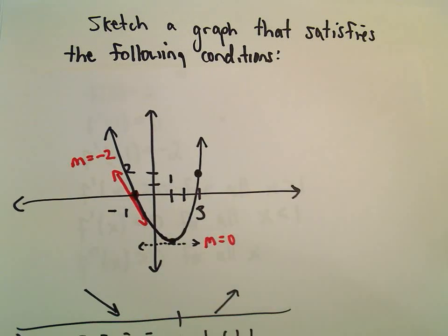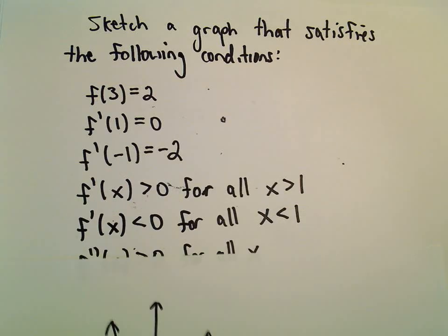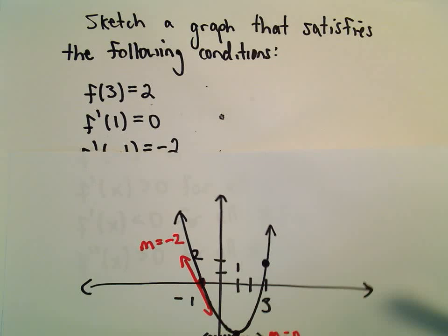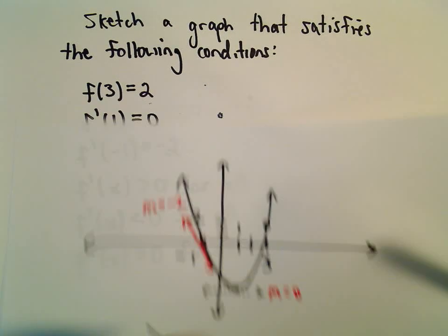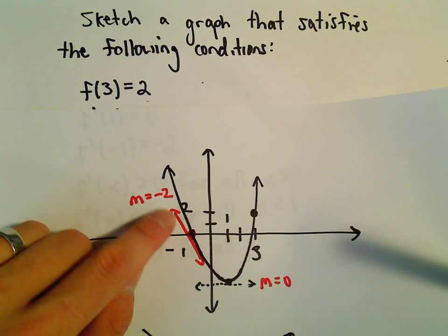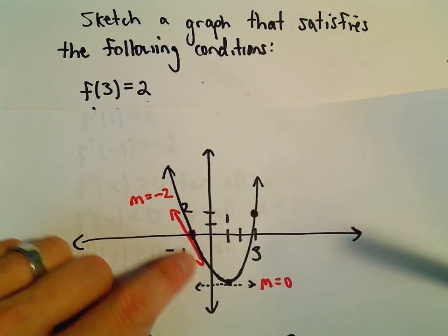Now we've got a picture that agrees with all the conditions. It goes through (3, 2), f prime of 1 equals 0 so the tangent line is horizontal, and f prime of negative 1 equals negative 2, so at negative 1 the slope of the tangent line is negative 2.